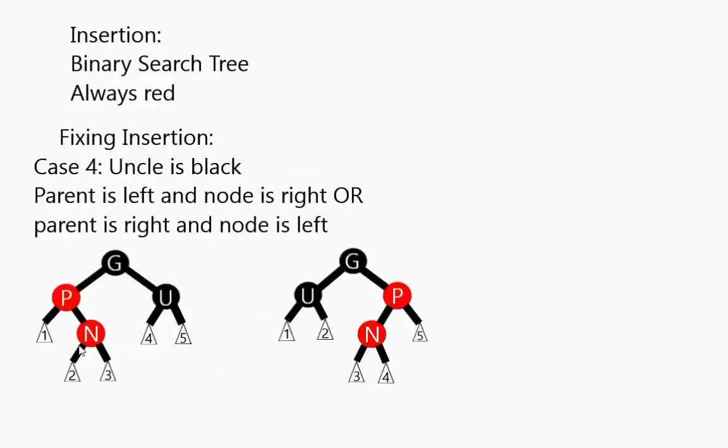Case 4. The uncle is black. The parent is to the left of the node, and the node is to the right, or alternately, the parent is to the right and its node is to the left. So basically you have this sibling pair here, with the node being in the same direction as the uncle. Notice these things down here are subtrees. There may be other nodes down below. This one may be a whole bunch of other nodes that are attached. These are basically the links to the rest of the tree.